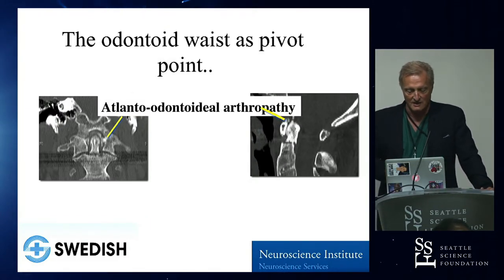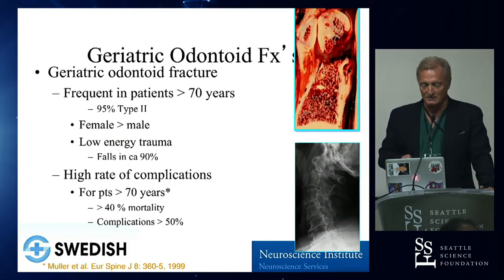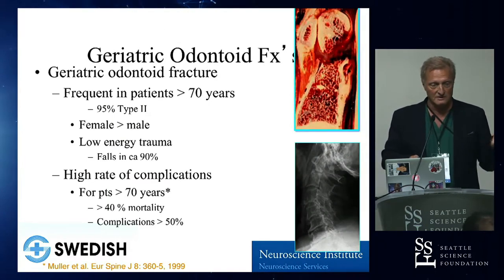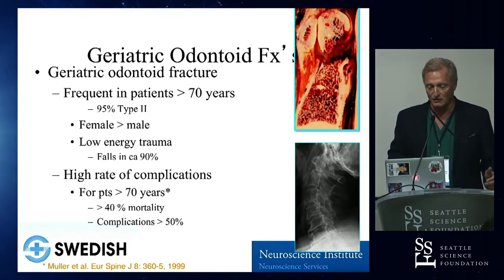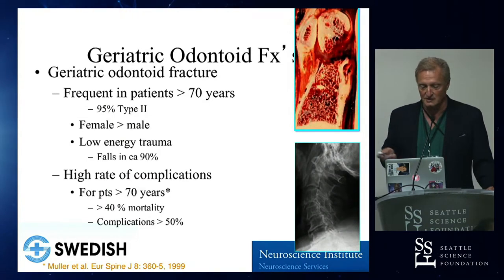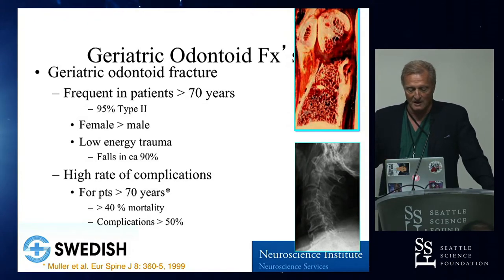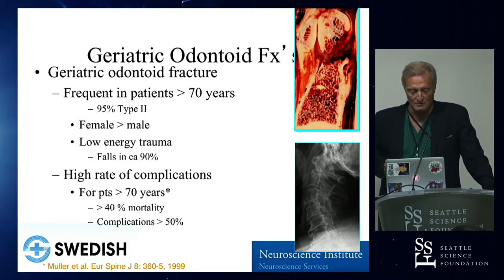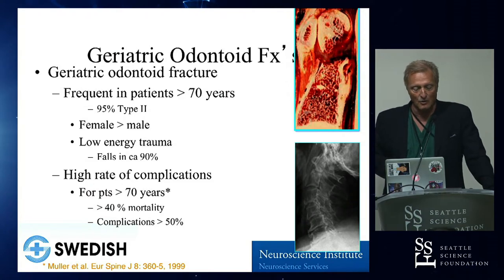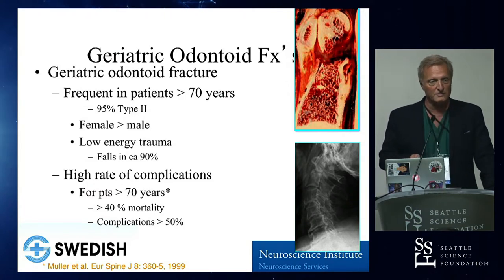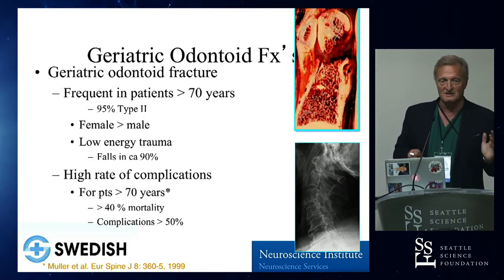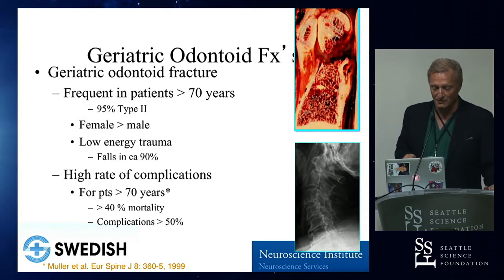That's the problem — it's a stiffening problem, and when you fall and twist your head, it cracks where it should. Fractures in over-70-year-olds now are mainly type 2 injuries, more females than males, and low-energy trauma — which, statistically speaking, is more fatal than high-velocity trauma.